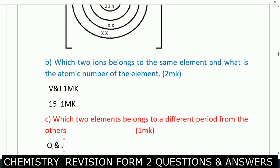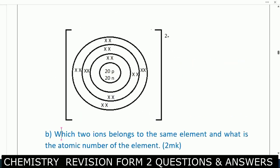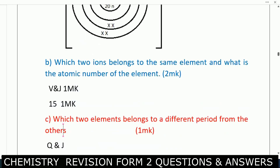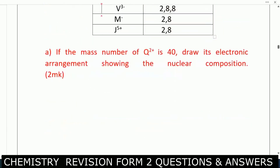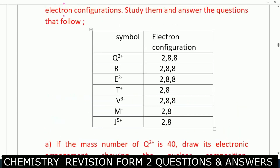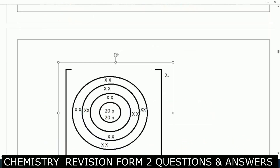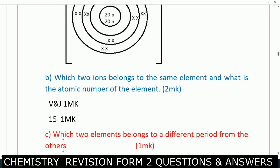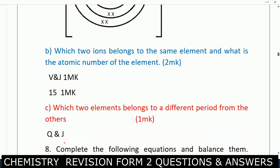Which ions belong to the same element, and what is the atomic number of that element? Ions V and J belong to the same element. Looking at them in the table — V and J — they belong to the same element, and the atomic number is 15.